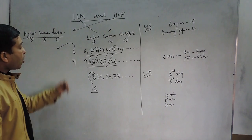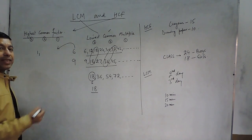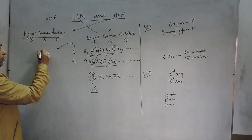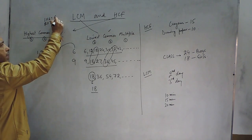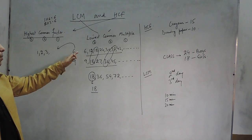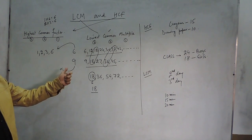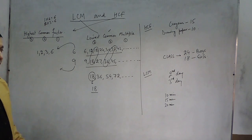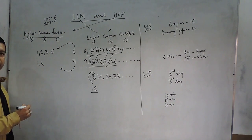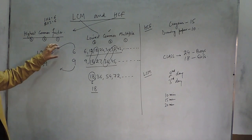When we look at factors of 6 — on the number line, whichever numbers have 6 in their table: 1 × 6 = 6, so 1 is a factor; 2 × 3 = 6, so 2 is a factor; 3 is a factor; and 6 itself is a factor. For 9: the table of 1 contains 9, the table of 2 does not have 9, the table of 3 has 9, and the table of 9 has 9. So 1, 3, and 9 are the factors of 9, and 1, 2, 3, and 6 are the factors of 6.